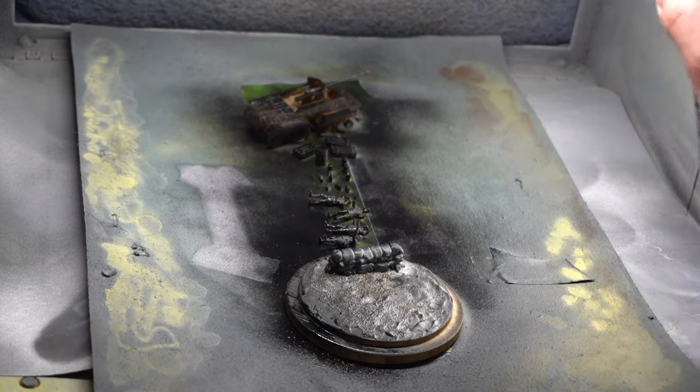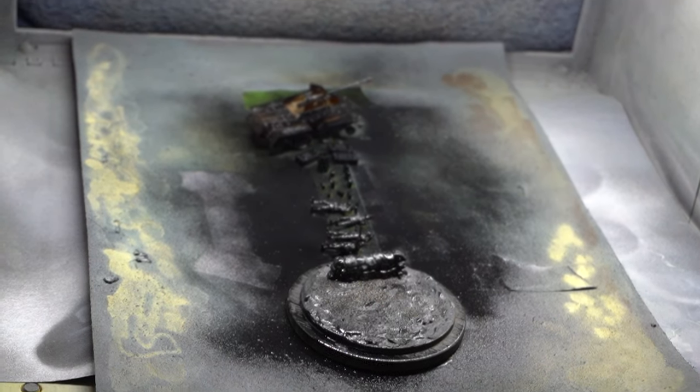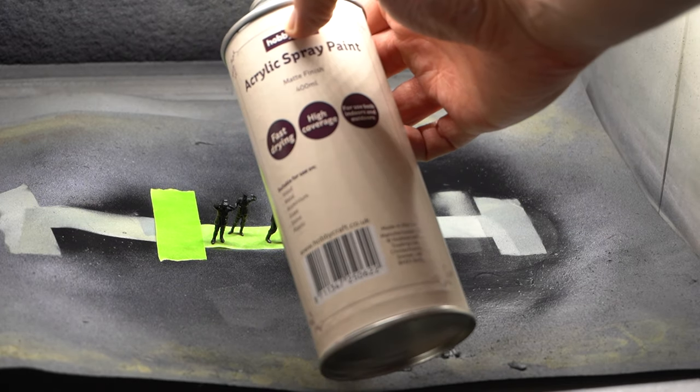So this included the vehicle, the 3D printed accessories, and the display base itself. Once that was done, I went for this Hobbycraft white and used a zenithal highlight.